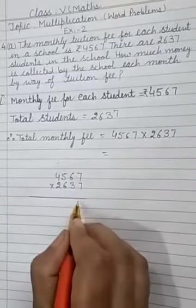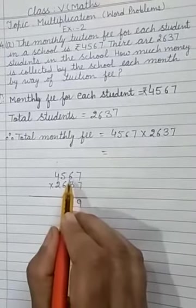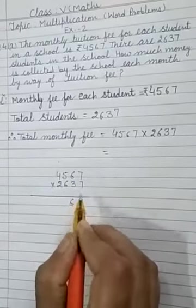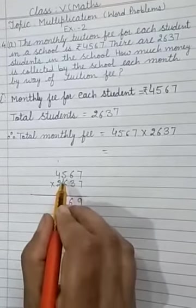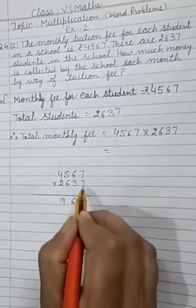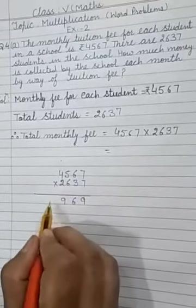Let us start the multiplication. Here, we will multiply this number by ones digit. It is 7. Now, 7 times 7 is 49, 4 carry. 7 times 6 is 42, 42 plus 4 is 46, 4 carry. 7 times 5 is 35, 35 plus 4 is 39, 3 carry. 7 times 4 is 28, 28 plus 3 is 31.